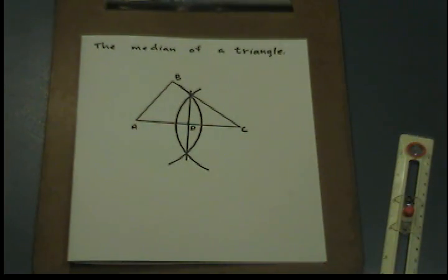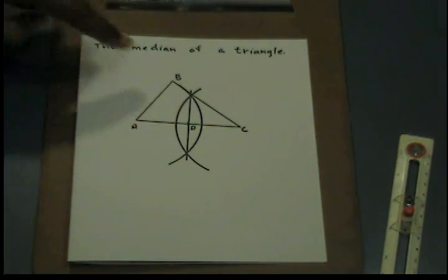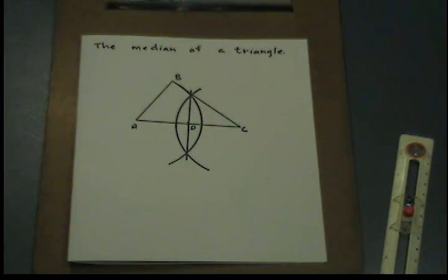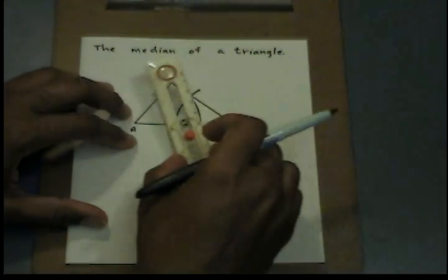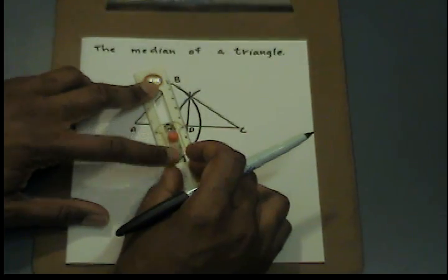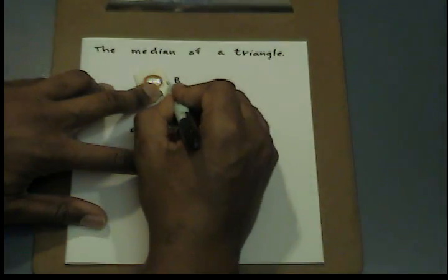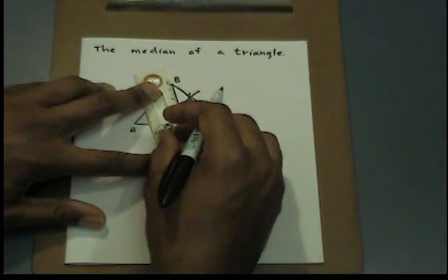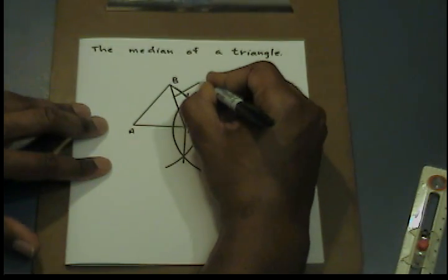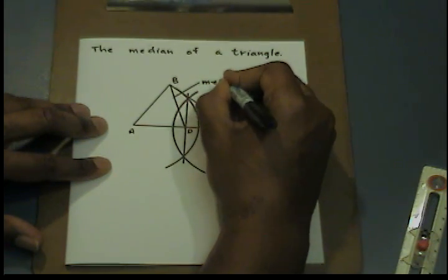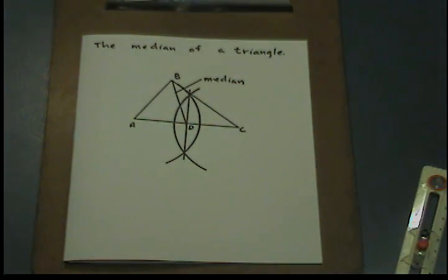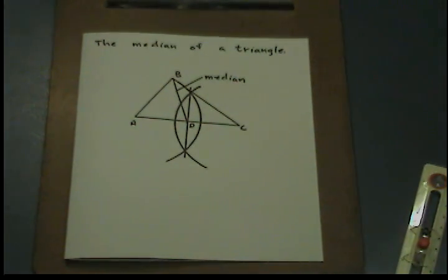To finish up, I'm going to draw a line from point B to D. That will be my median. BD is our median. Now we have constructed the median of a triangle.